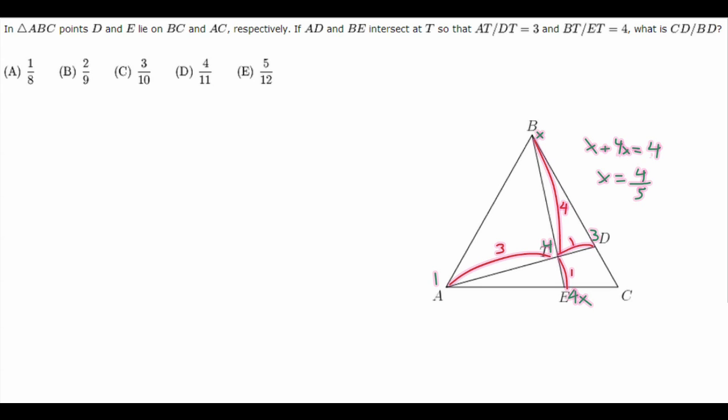So now we can replace X and 4X with 4 fifths. And 4 times 4 fifths is 16 over 5.